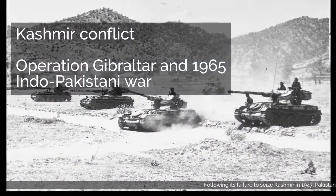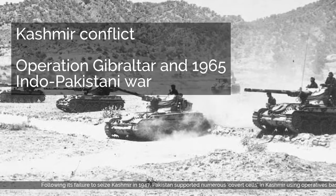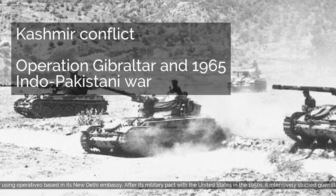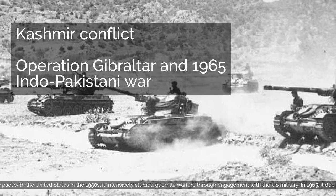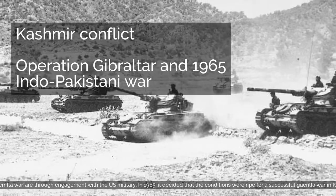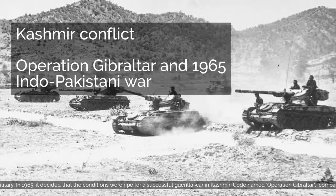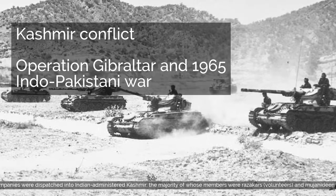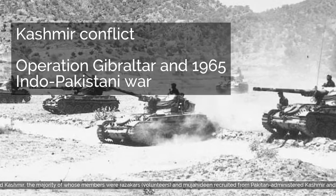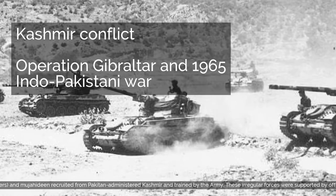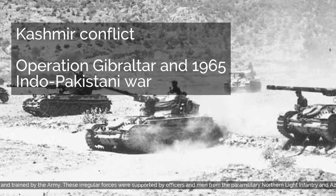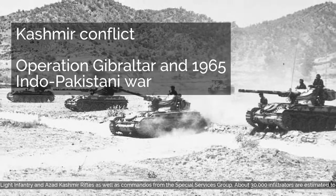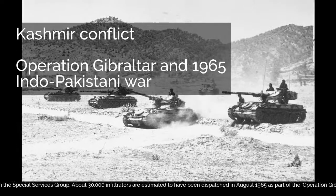Following its failure to seize Kashmir in 1947, Pakistan supported numerous covert cells in Kashmir using operatives based in its New Delhi embassy. After its military pact with the United States in the 1950s, it intensively studied guerrilla warfare through engagement with the U.S. military. In 1965, it decided that the conditions were ripe for a successful guerrilla war in Kashmir. Code-named Operation Gibraltar, companies were dispatched into Indian-administered Kashmir, the majority of whose members were Razakars — volunteers — and Mujahideen recruited from Pakistan-administered Kashmir and trained by the army, supported by officers from the paramilitary Northern Light Infantry, Azad Kashmir Rifles, and commandos from the Special Services Group. About 30,000 infiltrators are estimated to have been dispatched in August 1965.